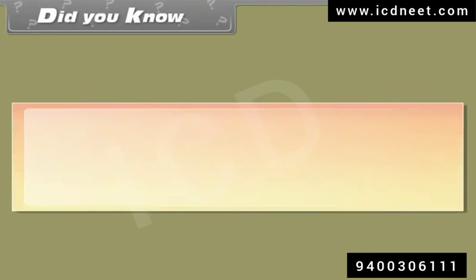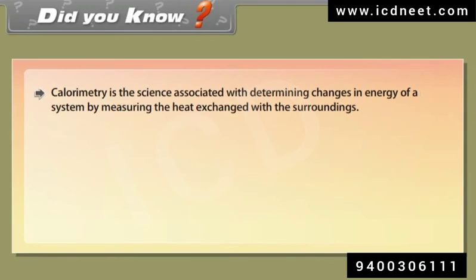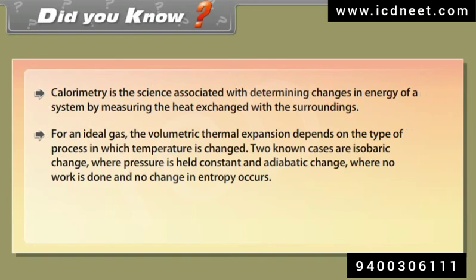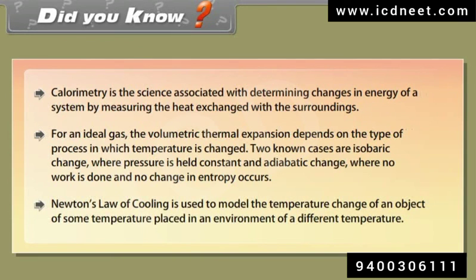Did you know: Calorimetry is the science associated with determining changes in energy of a system by measuring the heat exchanged with the surroundings. For an ideal gas, volumetric thermal expansion depends on the type of process — isobaric change when pressure is held constant, and adiabatic change where no work is done and no change in entropy occurs. Newton's law of cooling is used to model the temperature change of an object placed in an environment of a different temperature.